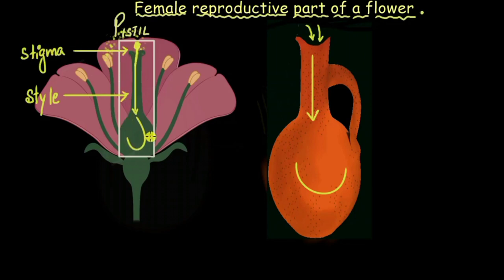And this broad area down at the bottom, it consists of the eggs or it holds the egg or the female gamete and this swollen area is called ovary. This is the ovary of the pistil.